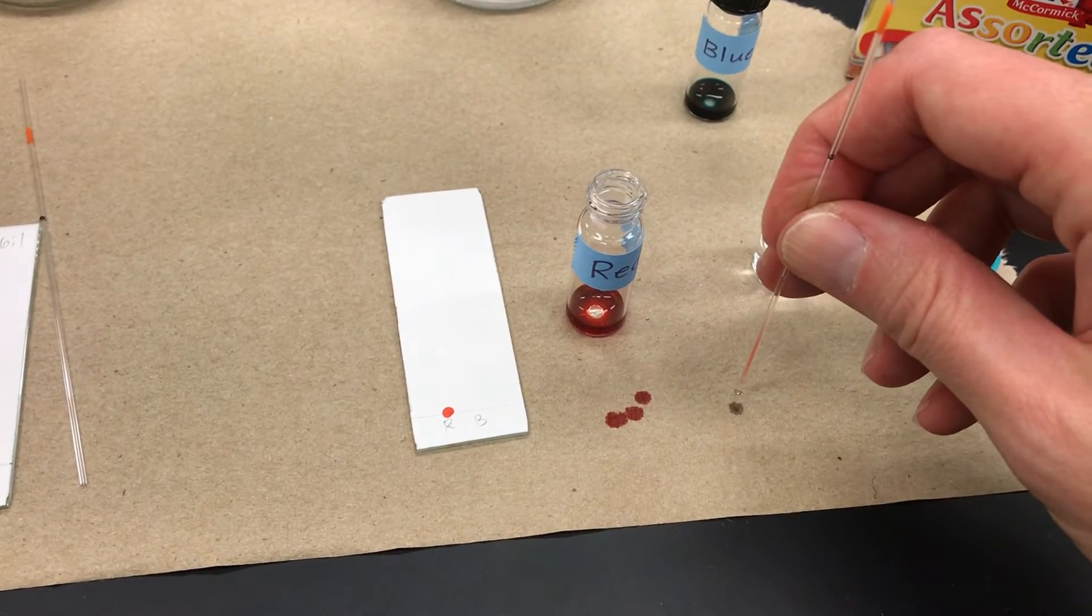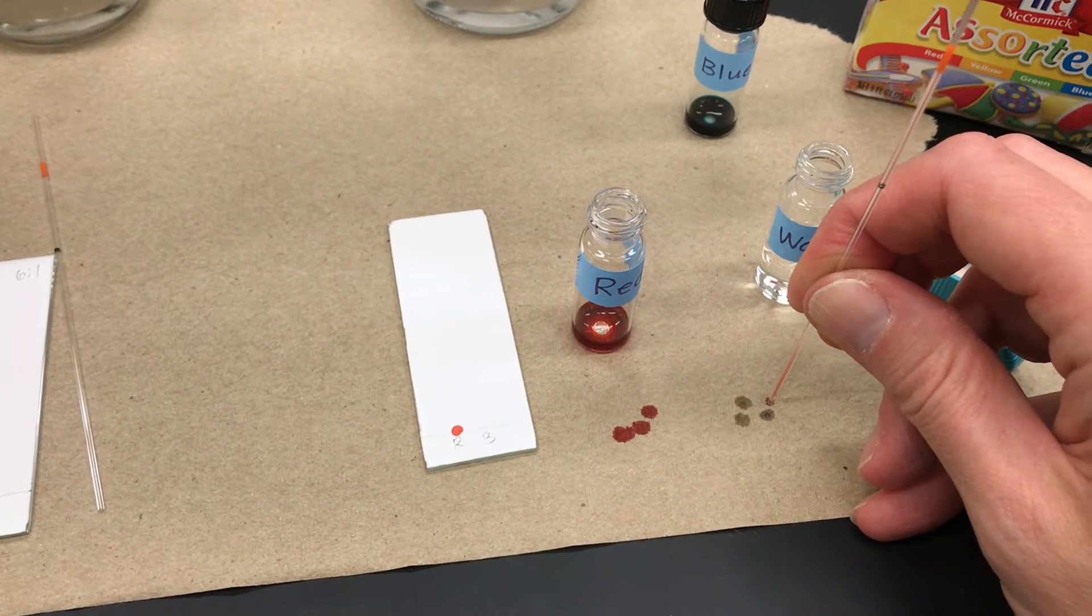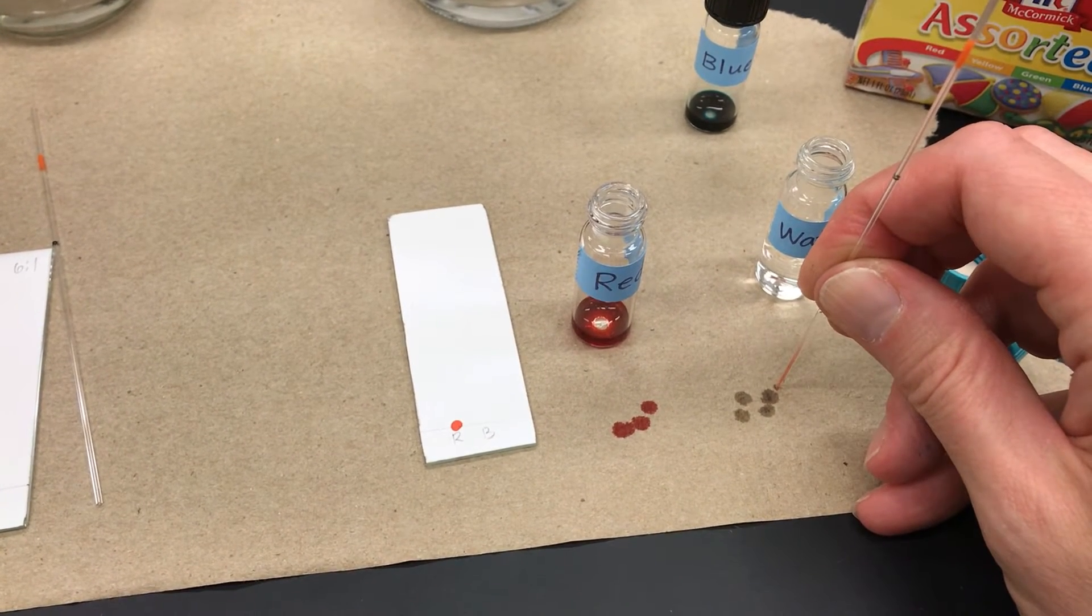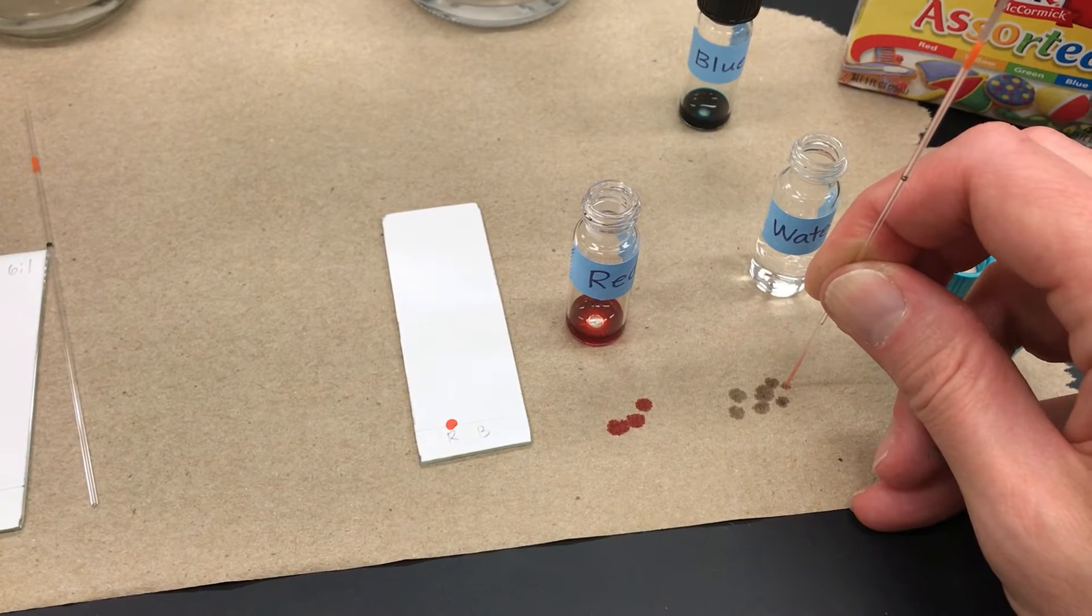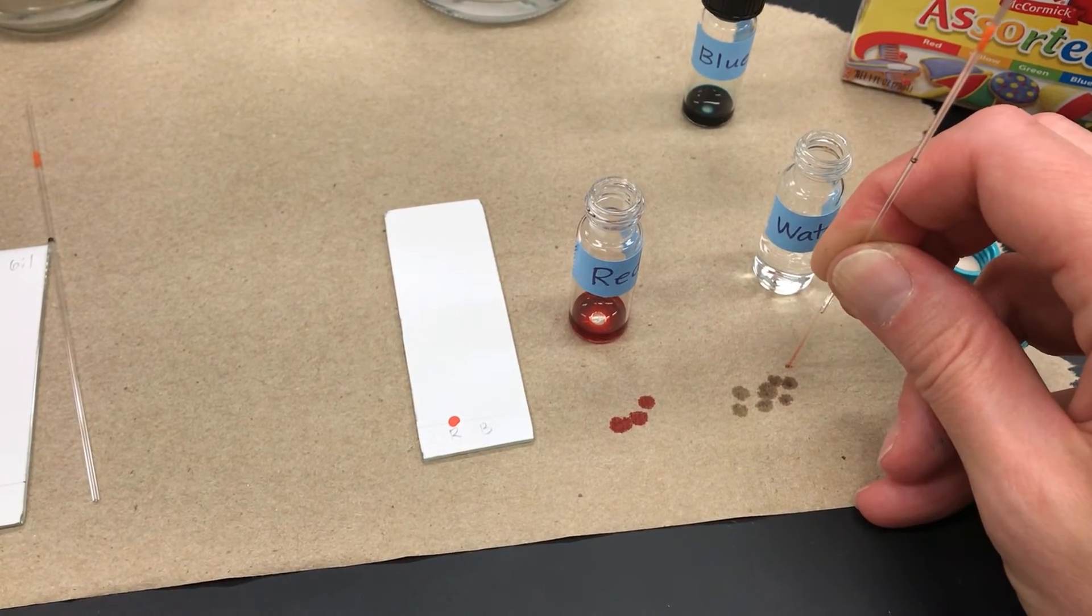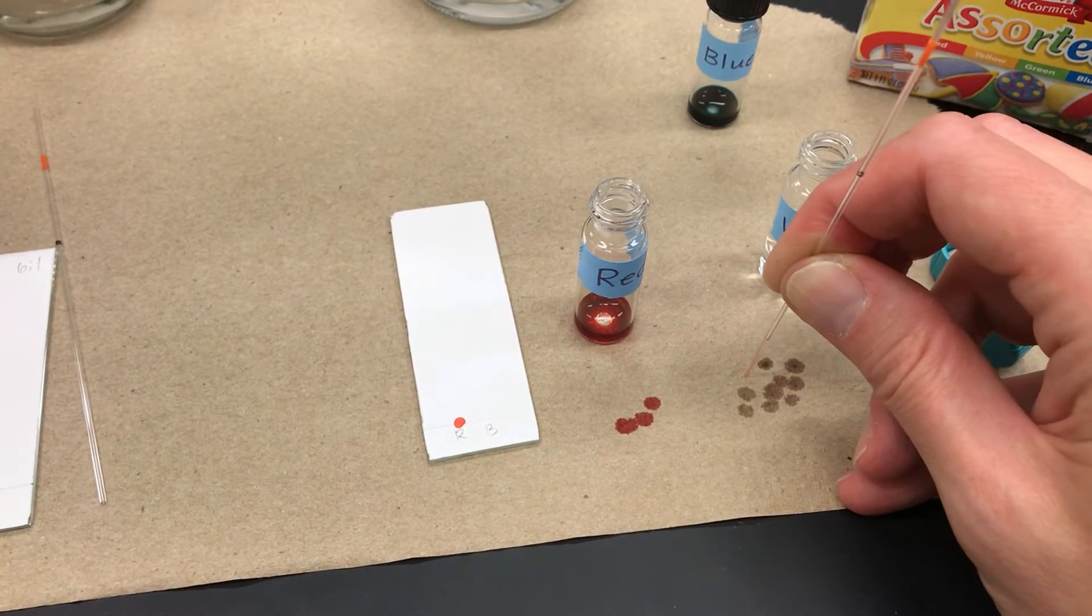I'm going to use the same capillary tube again. I can't just go and stick it in another sample, it's going to contaminate. So I need to rinse it out. For food dyes, since they're water soluble, I use a little vial of water. And I'm rinsing it out with the water.